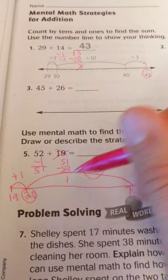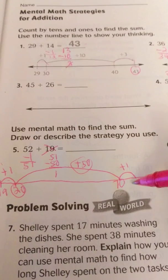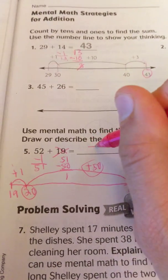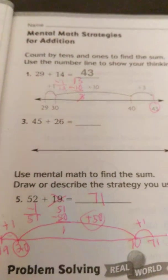And then I have one more left. I'm going to add that there to 70 plus 1, and that makes 71. And that is how we use mental math strategies for addition.